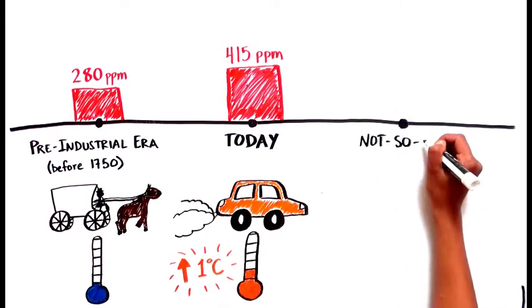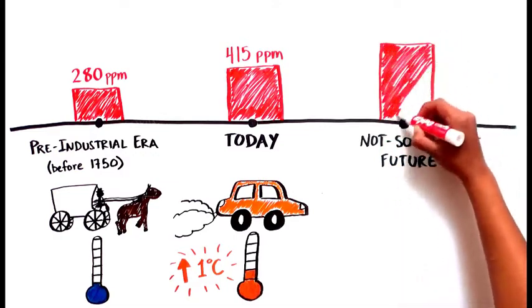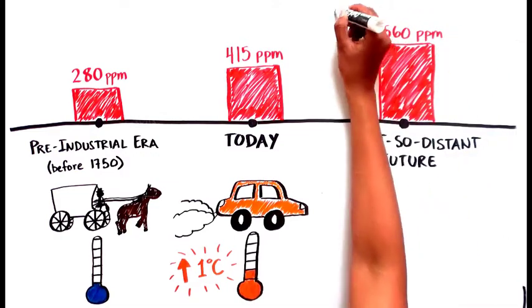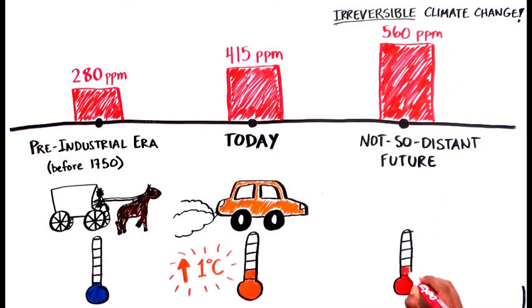Experts warn that a doubling of pre-industrial CO2 concentrations, up to 560 parts per million, could lead to irreversible climate change, with warming as high as 4 degrees Celsius.